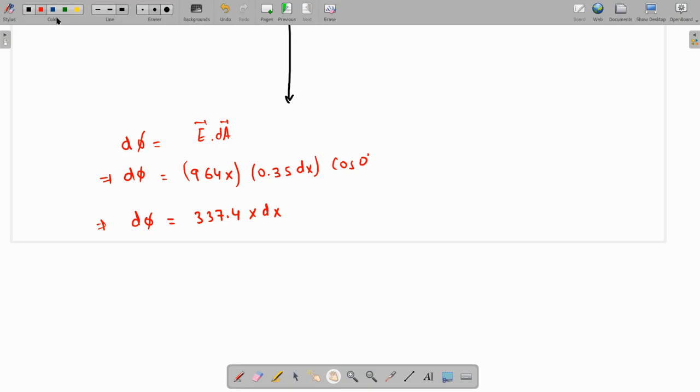And this is the required elemental flux. So the total flux is going to be, we integrate both sides and the values of X from 0 to 0.35.